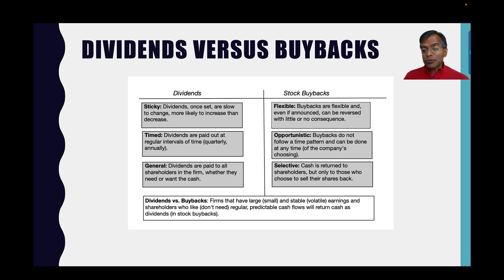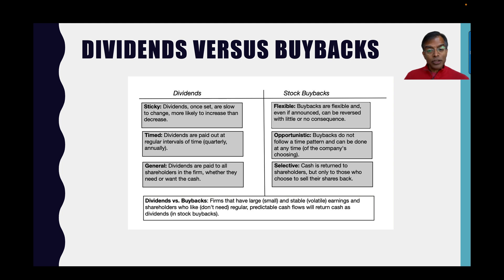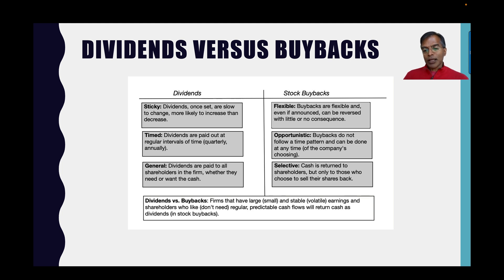Buybacks tend to be flexible. When you're doing well, you can have large buybacks; when you're doing badly, you stop them — and markets don't read signals into that. Dividends tend to be timed, coming out at the end of every quarter in the US, or every six months or a year, at regular intervals. Buybacks can be opportunistic — you can buy back your shares when the stock price is low. Companies don't always take advantage of that flexibility, but they don't have to follow a set time pattern.